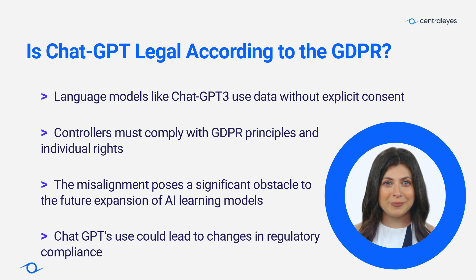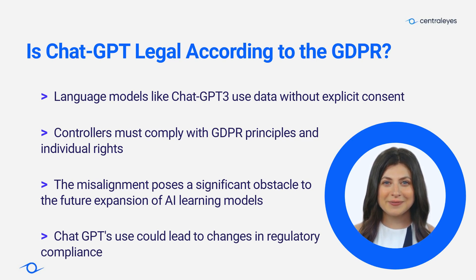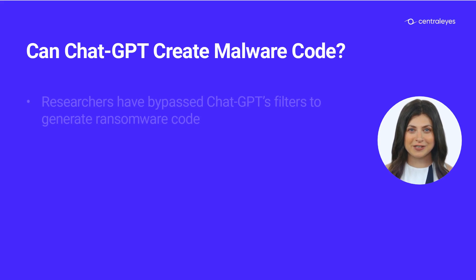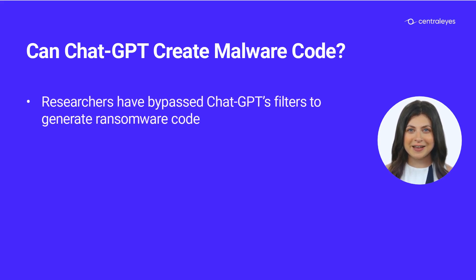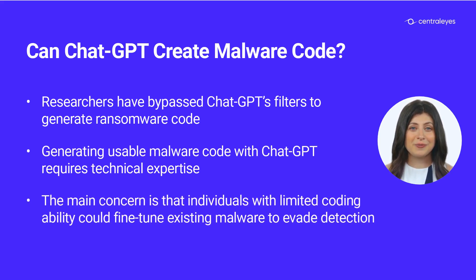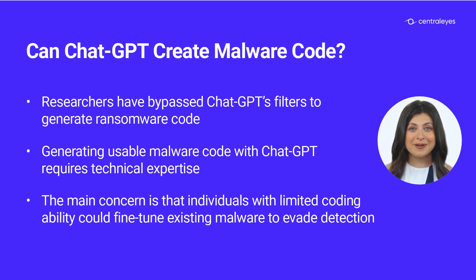ChatGPT use has the potential to trigger changes in regulatory compliance, especially in industries governed by strict data privacy regulations like GDPR, HIPAA, and COPPA. ChatGPT-3 claims not to create malware directly, but researchers have found ways to bypass its filters and get it to write ransomware code. Generating usable malware with ChatGPT requires technical expertise, but the bigger concern is that individuals with limited coding ability could fine-tune existing malware to evade detection. Responsible usage and monitoring of language models like ChatGPT are crucial to mitigate these cyber threats.